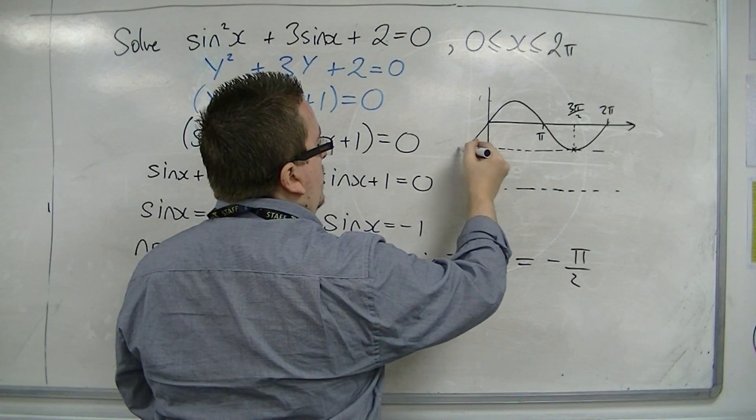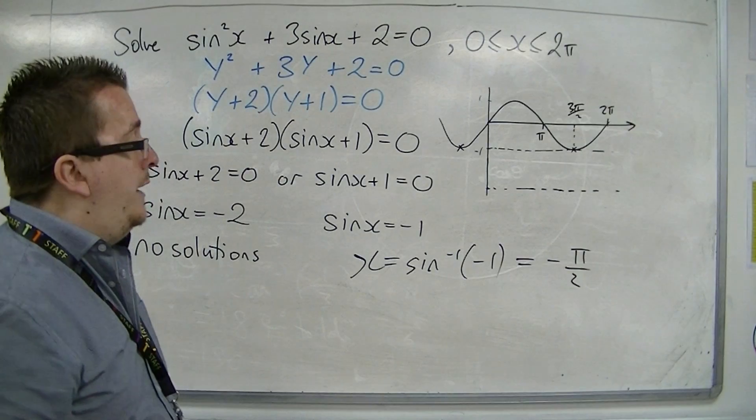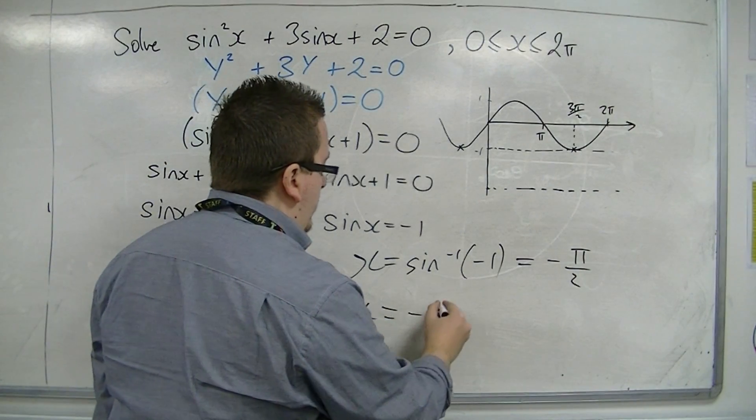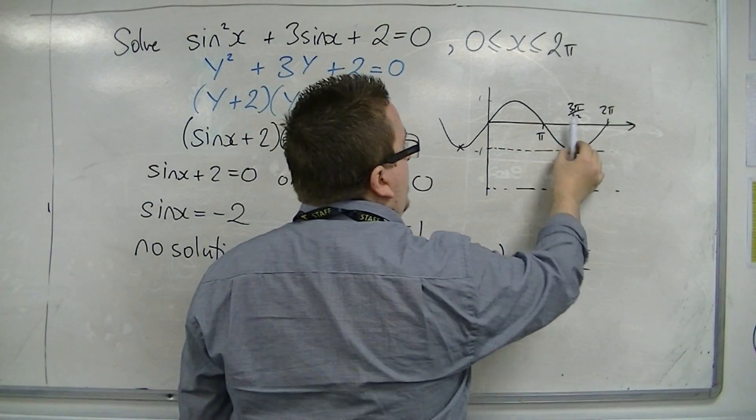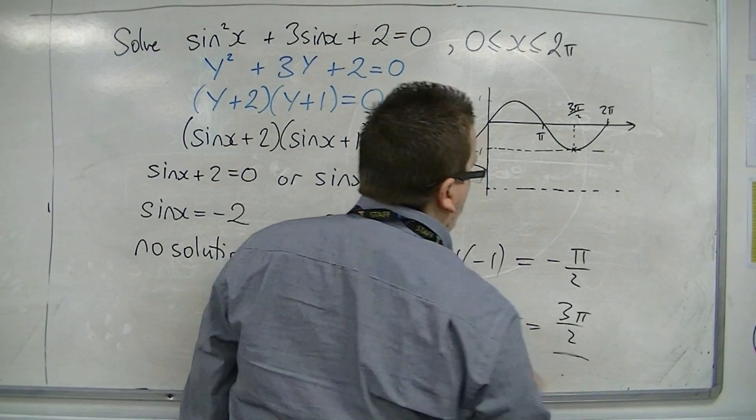It's actually giving you that one there, that's to the left of the y-axis. So, the solution we want is by adding on the period of sine, which is 2 pi, which gives us the 3 pi over 2 that we want.